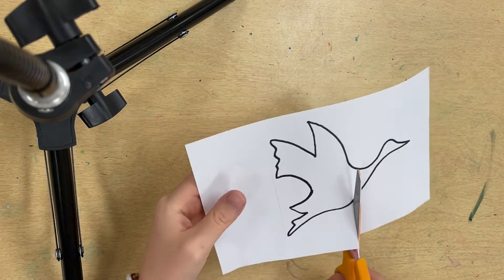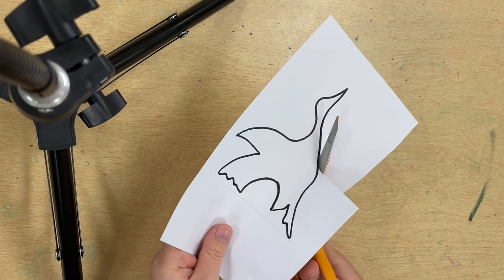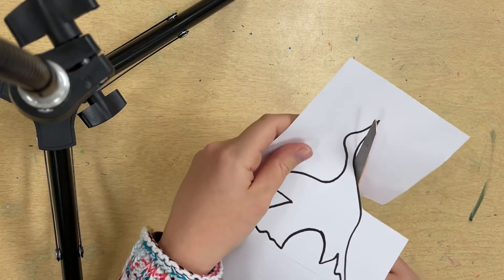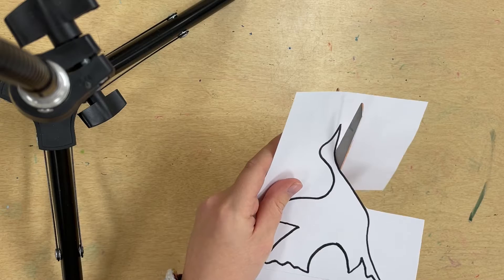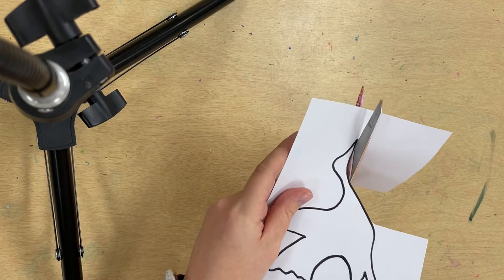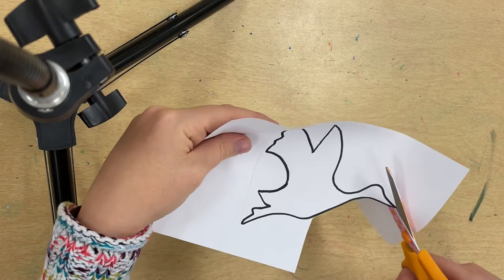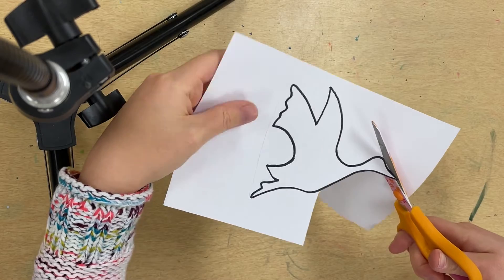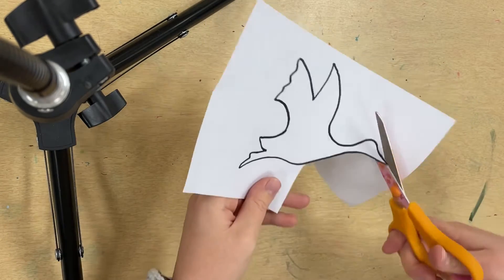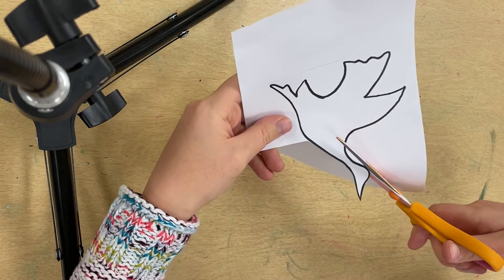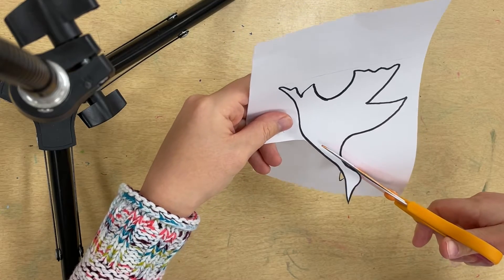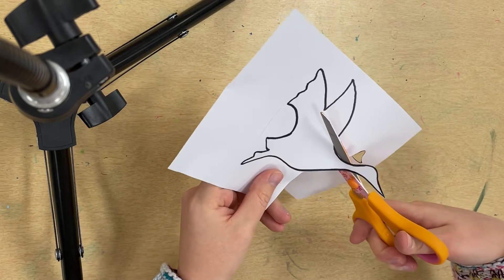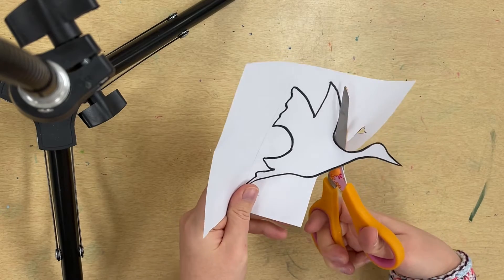I'm going to cut one slit into the paper and then go right around my animal without cutting off any chunks of paper, because we want to preserve both the positive space and the negative space. The positive space is the shape itself. The negative space is the shape it leaves behind in the paper. When we're done cutting, we're going to have two different kinds of stencils that we will use in our artwork.